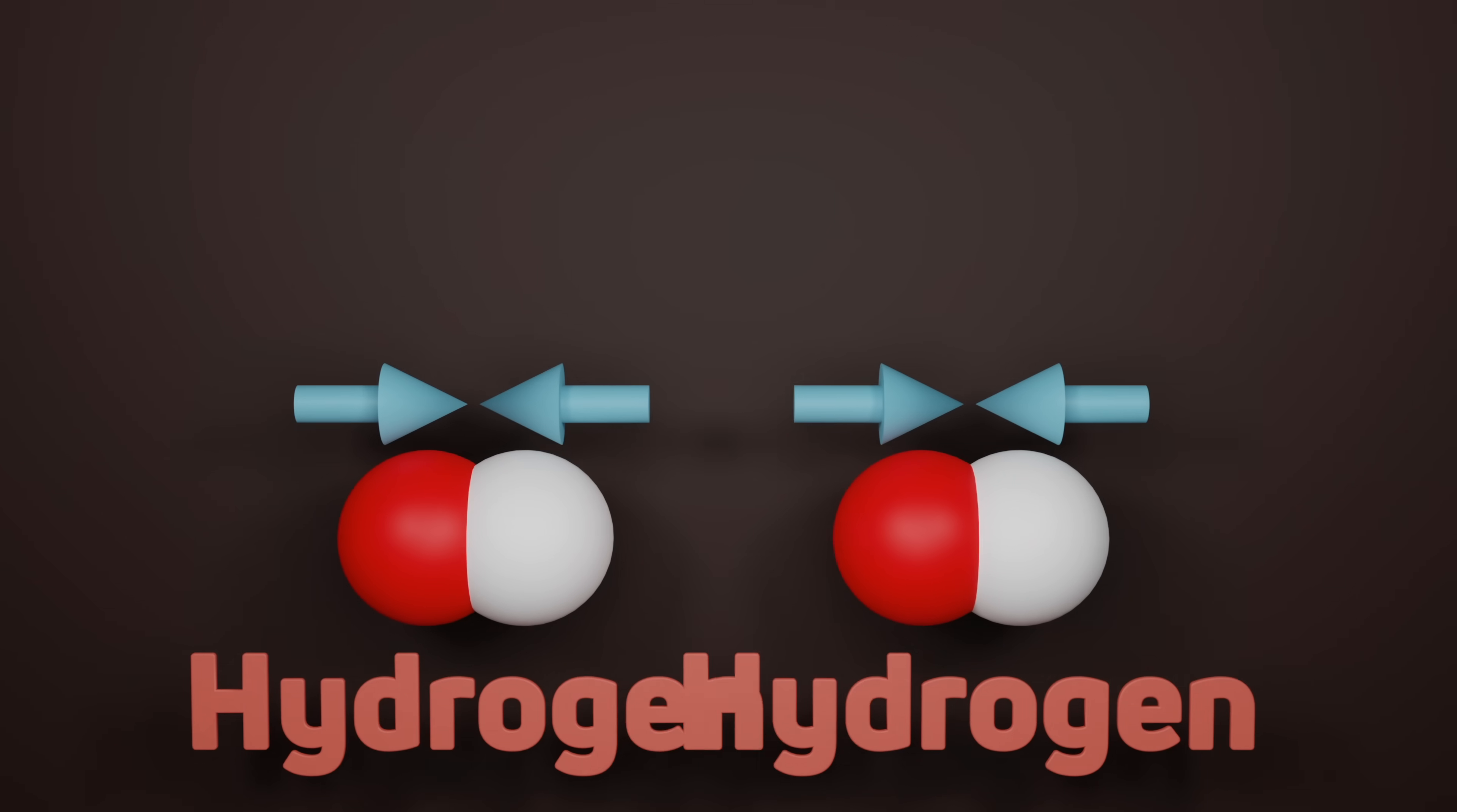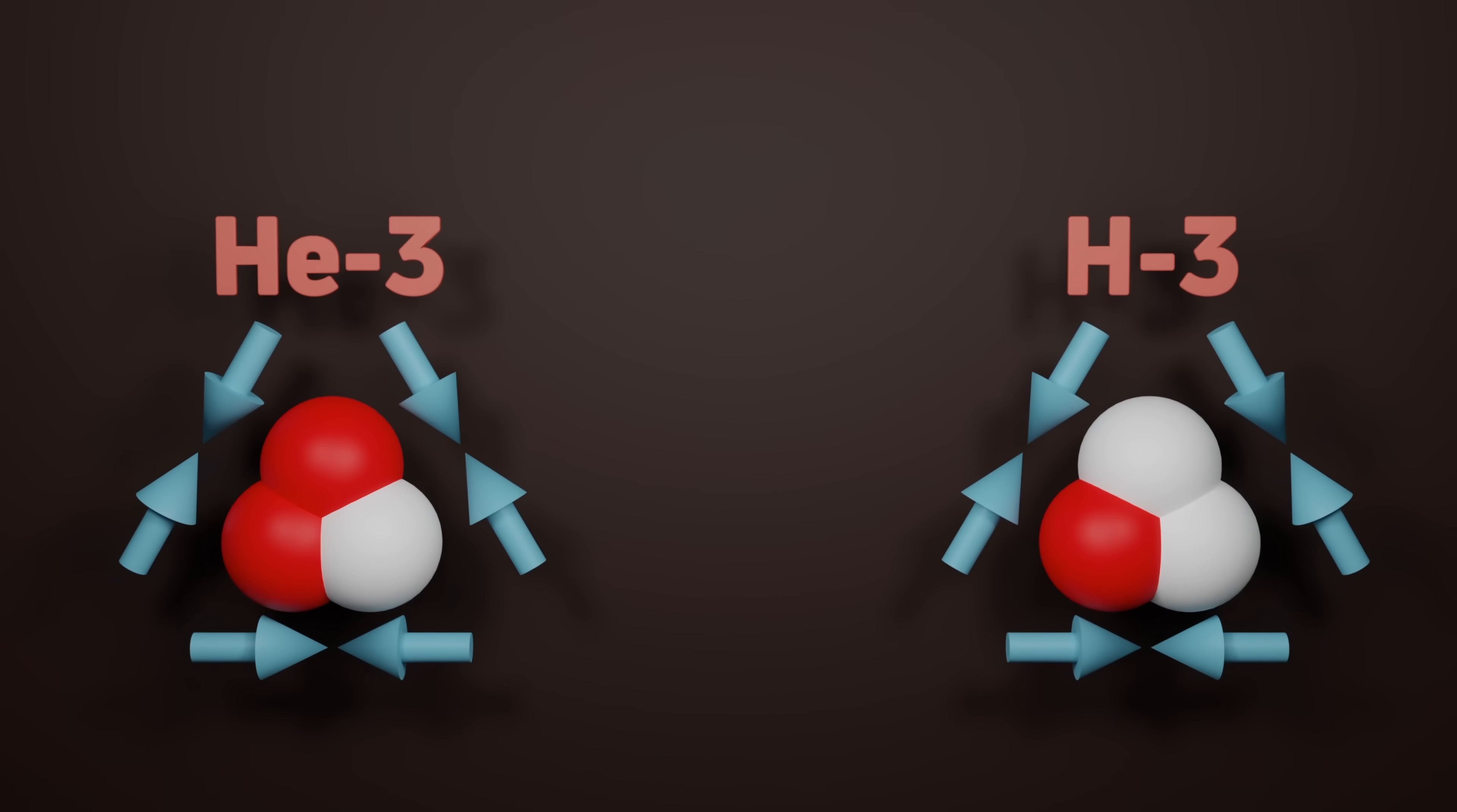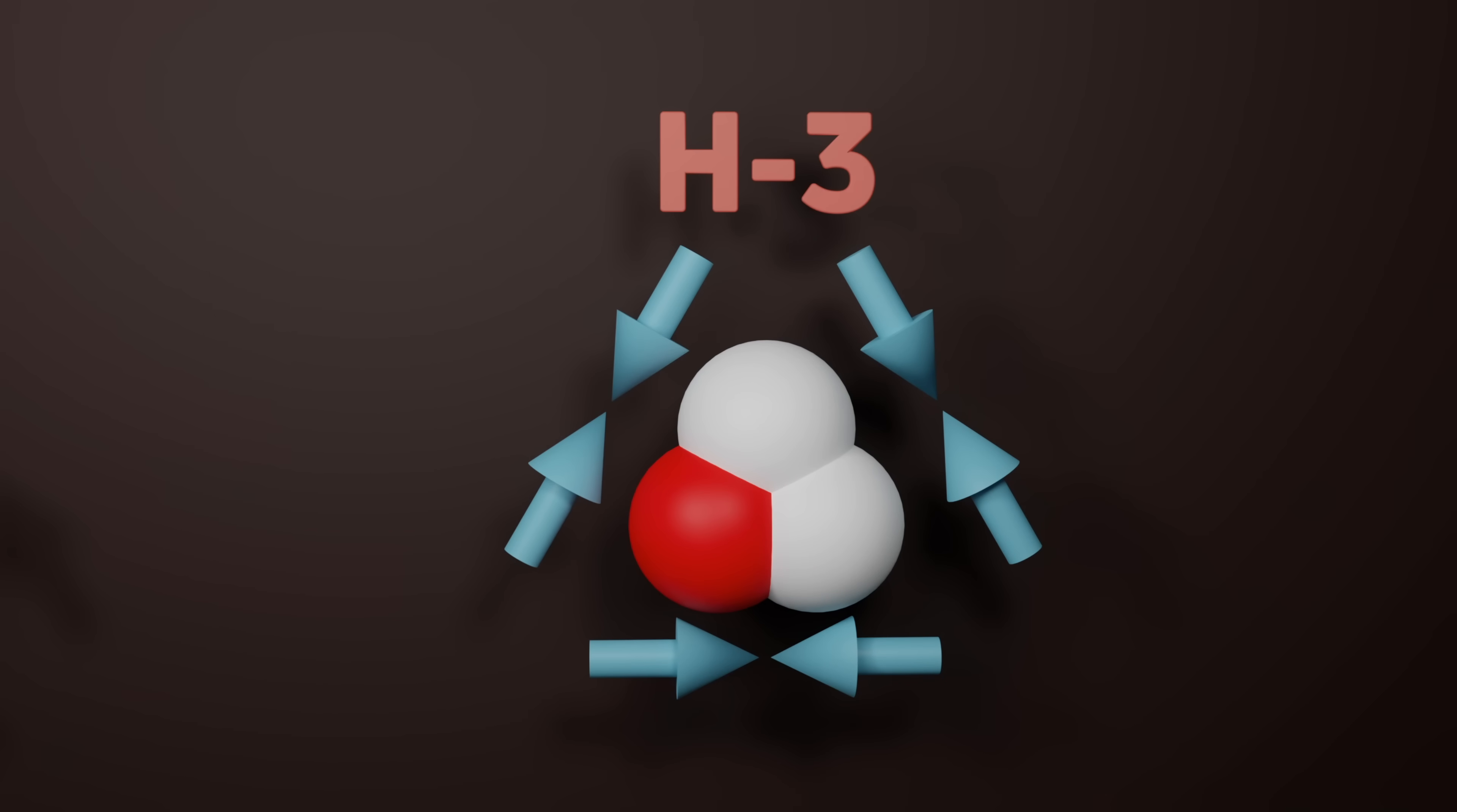If we add another nucleon, either neutron or proton, we add another source of attraction which helps hold the nucleus together. But if the added particle was a proton, then we add an additional source of repulsion. If it's a neutron, we add a less stable member.